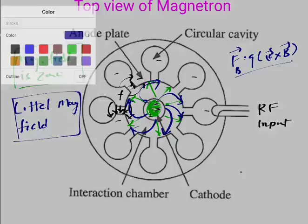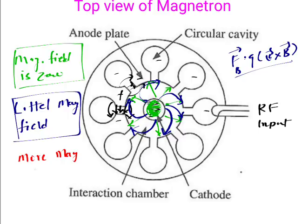In the third case, when I increase the magnetic field even more, the electrons emerging from the cathode will curve back and return toward the cathode rather than reaching the anode. So with more magnetic field, electrons do not go towards the anode. Ultimately, by controlling the magnetic field: higher the magnetic field, less the number of electrons transferred from cathode to anode.